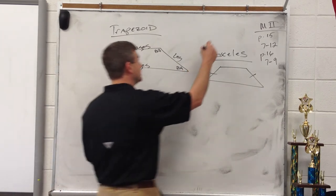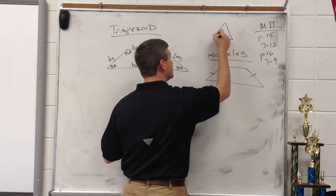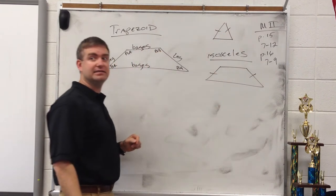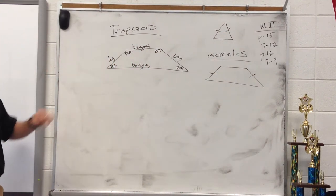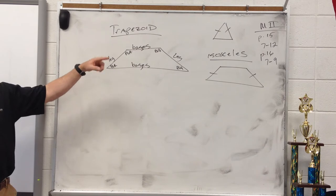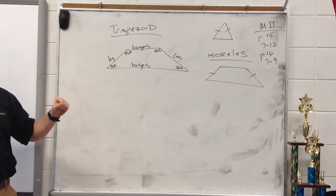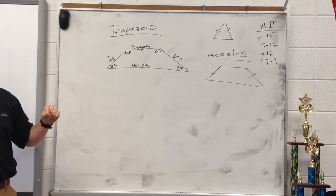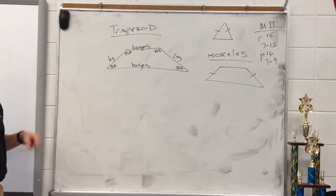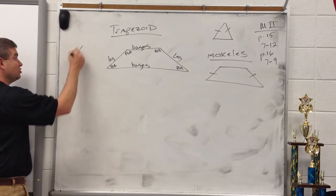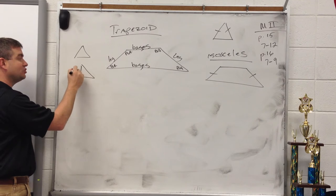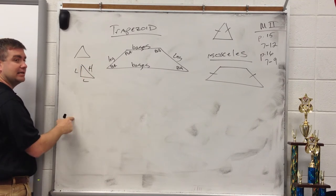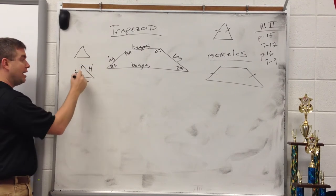What else is isosceles? A triangle. A triangle can be isosceles if two sides are congruent. What other figure in geometry has legs? A right triangle, because if it is a right triangle, we have leg, leg, and hypotenuse. So we talked about legs, base angles, and got into the definition of isosceles trapezoid.